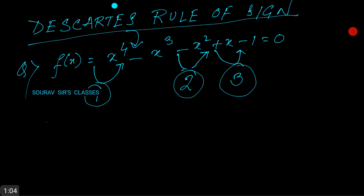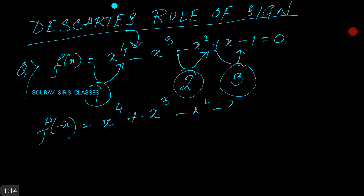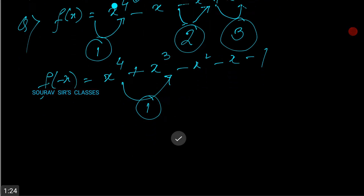If we replace x by minus x, we will have x⁴ + x³ - x² - x - 1, and this gives us only one variation.